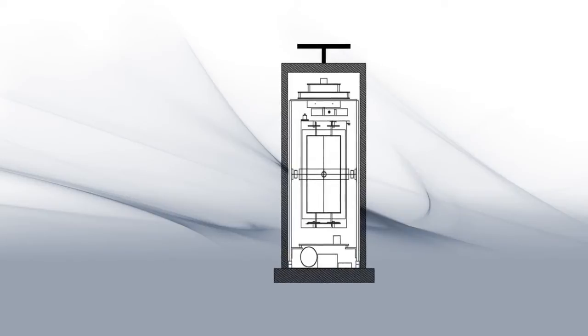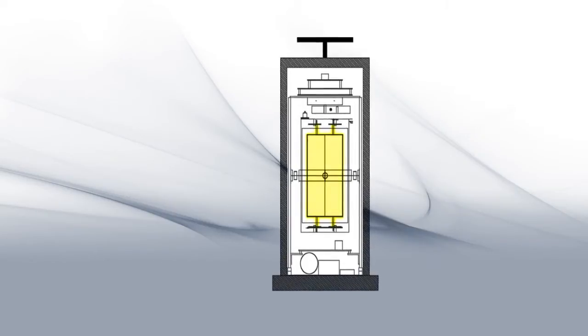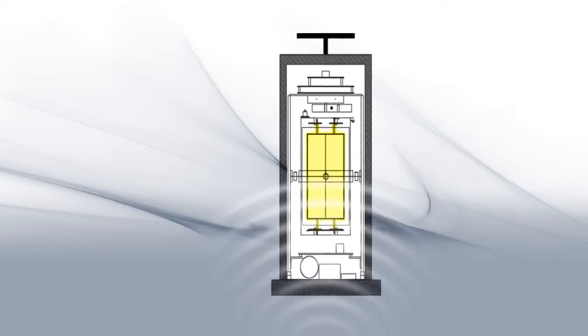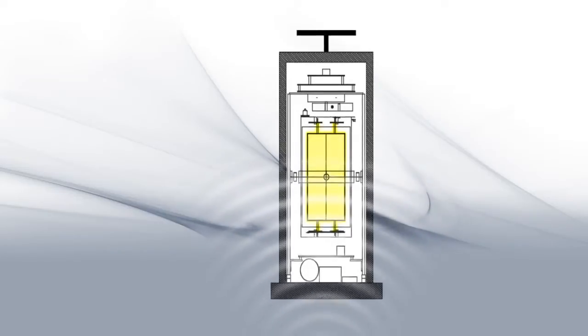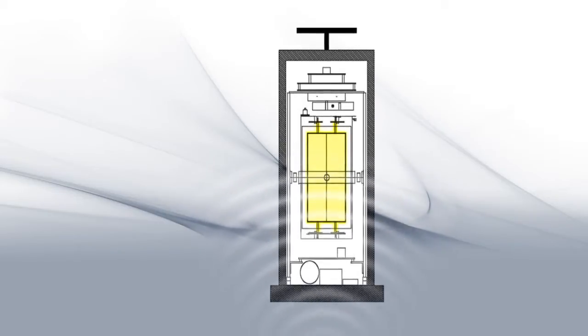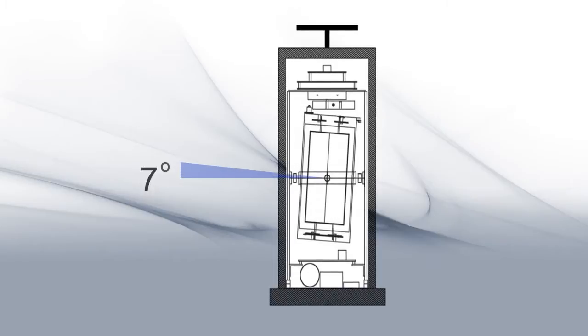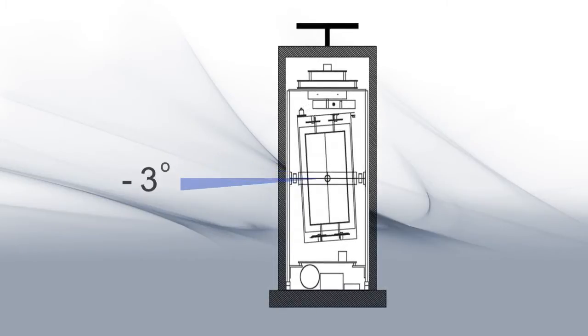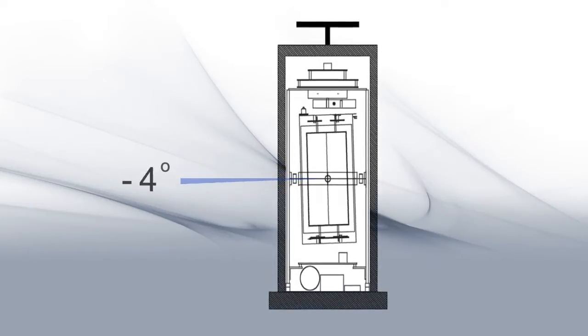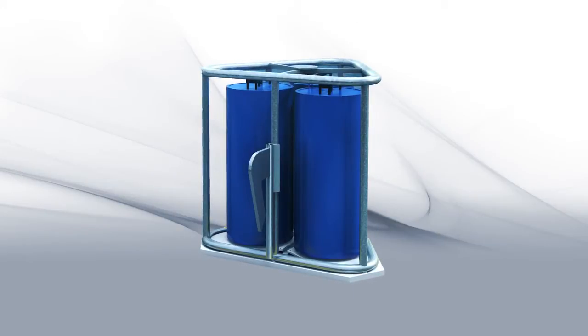The core element of the gravimeter is a mass on a spring. By measuring the mass's microscopic movements, the technology is able to calculate the gravitational field. The system is held in a gimbal which is actively leveled before measurement begins. There are three independent systems in each module.